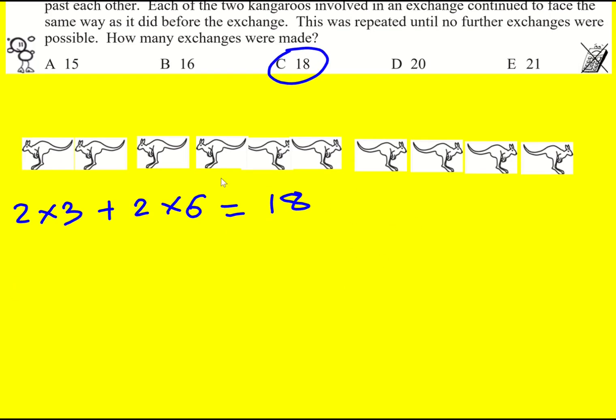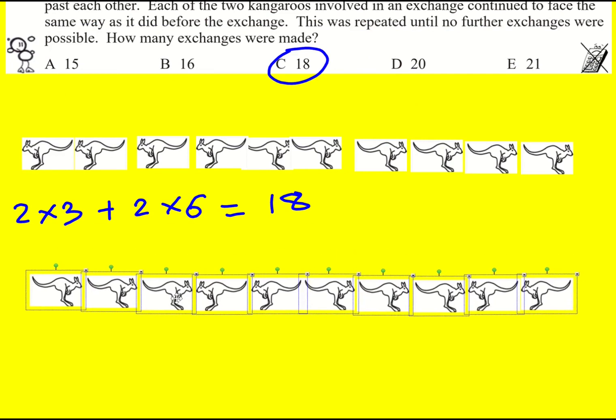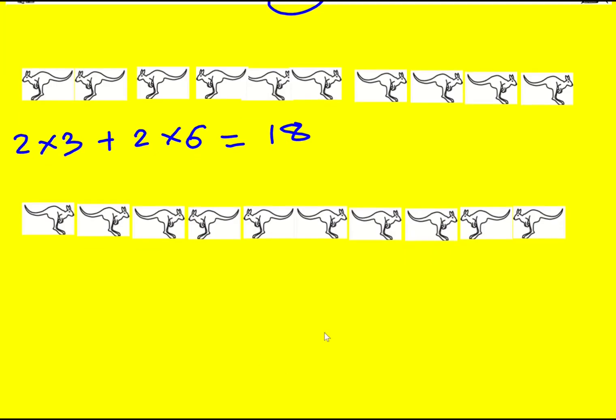Let's just take a look at if we considered the ones facing to the right, how would it differ? Well, we get the same answer, but now I'd get these three moving beyond. So it would actually be three lots of two that they've moved.